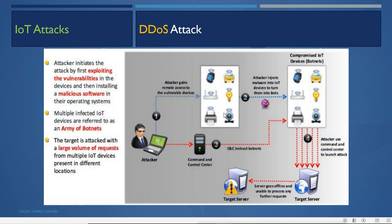The attacker gains remote access to vulnerable IoT devices through a Trojan, then injects malware to turn them into botnets. These botnets connect to the attacker's command and control (C&C) center, which issues commands to attack a target, sending it offline and causing a distributed denial of service attack.